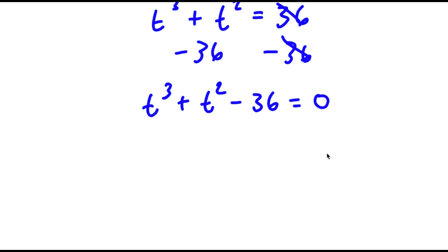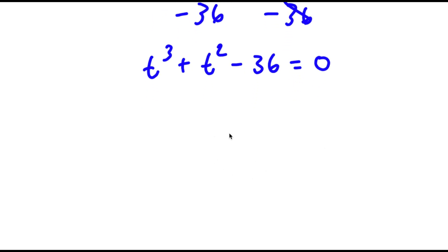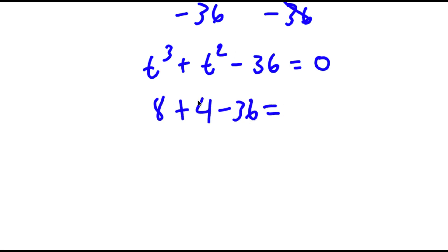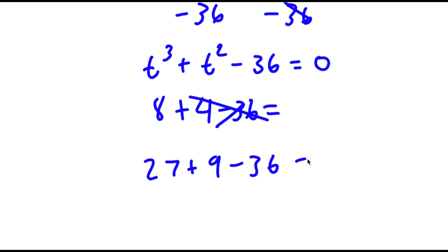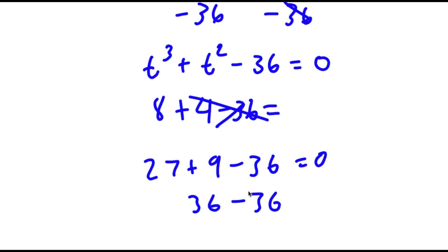To solve this I need to find one value of t by plugging in values. Plugging in 0 gives negative 36. Plugging in 2 gives 8 plus 4 minus 36, which doesn't work. Plugging in 3 gives 27 plus 9 minus 36, which equals 0 — that works. So t equals 3 is one solution.